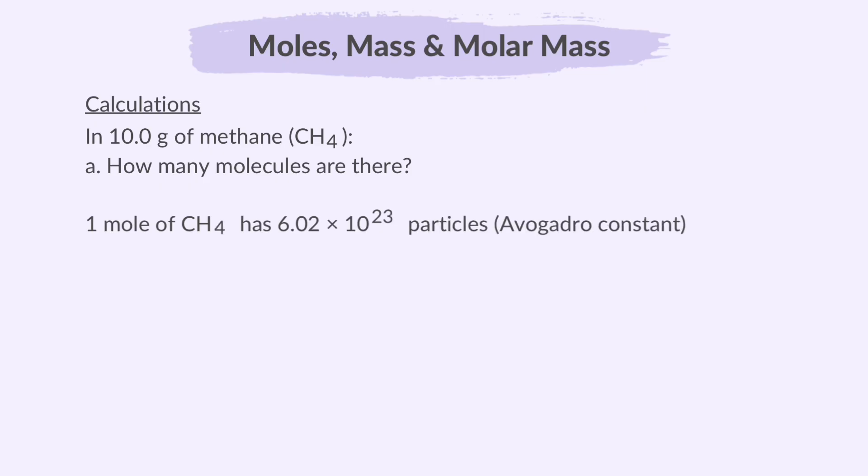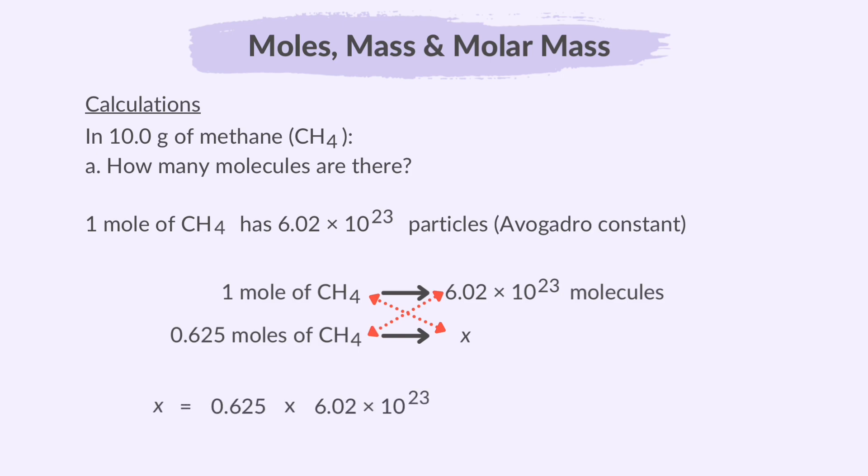We learned the Avogadro's constant, which is 1 mole of any substance contains 6.02 times 10 to the power 23 particles. We just found that 10 grams of methane contains 0.625 moles. If 1 mole of CH4 has 6.02 times 10 to the power 23 molecules, how many molecules are there in 0.625 moles? Let's do a simple cross multiplication. X equals 0.625 multiplied by 6.02 times 10 to the power 23. That gives us 3.76 times 10 to the power 23 molecules.